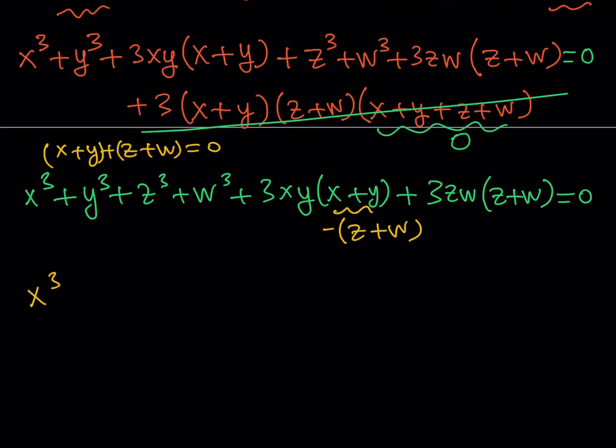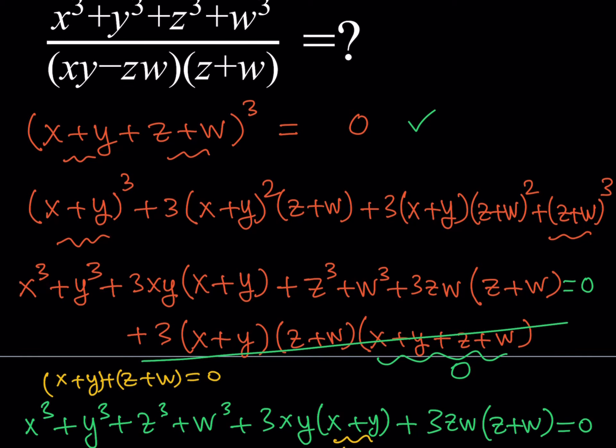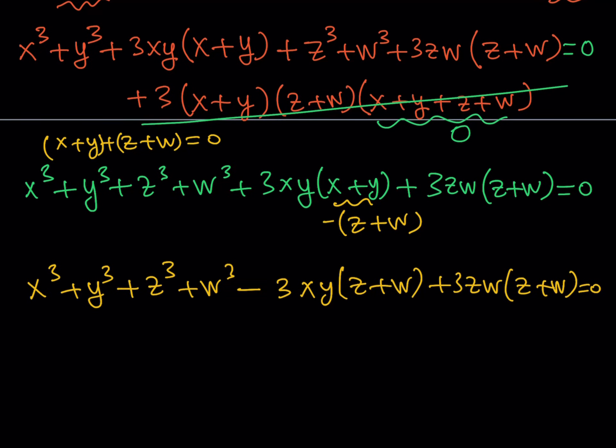From here, I should be getting minus 3xy times z plus w plus 3zw times z plus w. Since this is equal to zero, if you go to my original expression, we have the sum of the cubes in the numerator. The bottom looks familiar. It makes sense if you put the z plus w's on the other side.